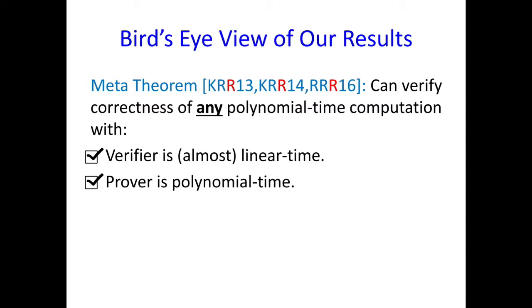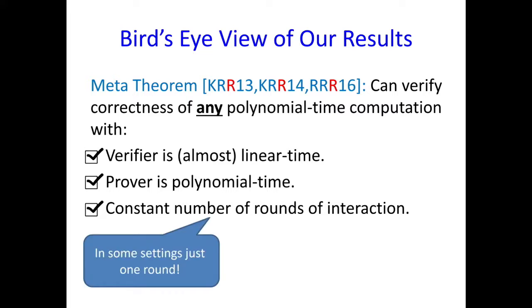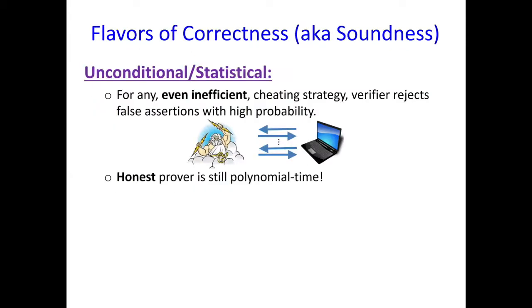A really interesting aspect is that the entire interaction only takes a constant number of rounds. Even if you're considering a very large input length, the entire interaction is just a constant number of rounds. In some settings, we can get this constant to be just one, meaning the entire interaction works as follows: you send over your input x to the server, maybe together with some sort of short challenge, you get back the result y and some kind of proof, you run in linear time, and you're convinced.